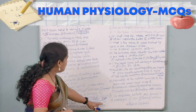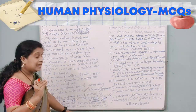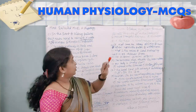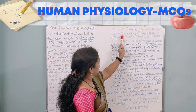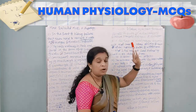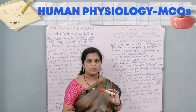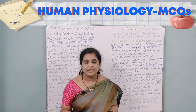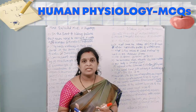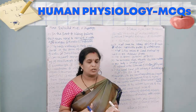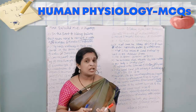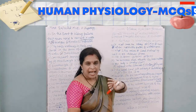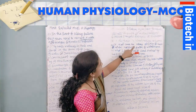The eighth question: which of the four parts does not constitute part of the convoluted tubule? The answer is collecting duct. The ninth question: glucose is taken back from the glomerular filtrate through — active transport, passive transport, osmosis, or diffusion? Osmosis and diffusion are not the answers. In active transport, biomolecules move from lower to higher concentration and energy is required. In passive transport, energy is not required as molecules move from high to low concentration. The answer is active transport.